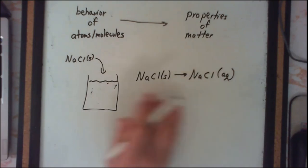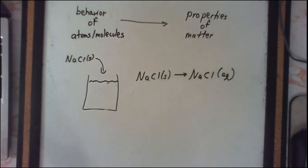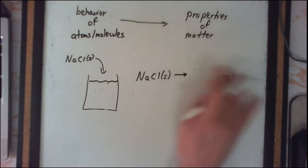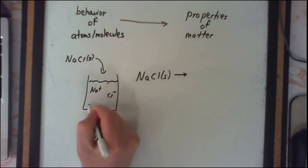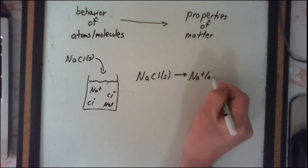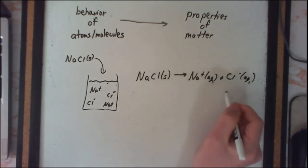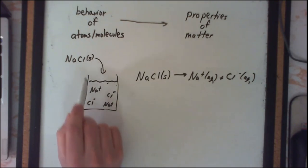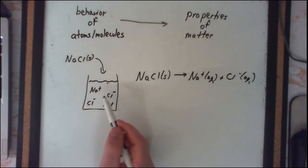For our purposes, we want to write more accurately. The best way is not simply solid NaCl going to NaCl (aqueous), but rather to represent what's actually occurring: sodium ions separated from chloride ions. So we represent that as sodium ions in the aqueous state and chloride ions in the aqueous state. This better represents what's occurring when an ionic compound dissolves in water — it produces ions, specifically from the ionic bonds breaking, so sodium ions separate from chloride ions.